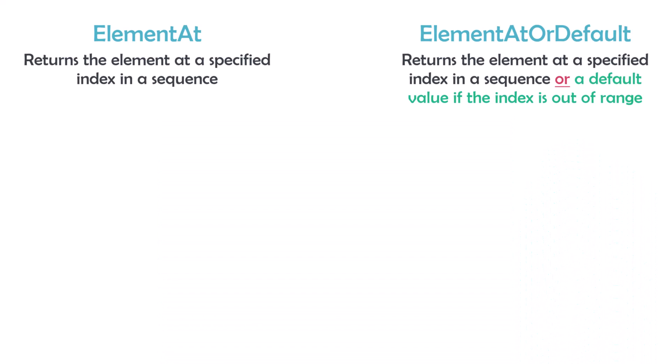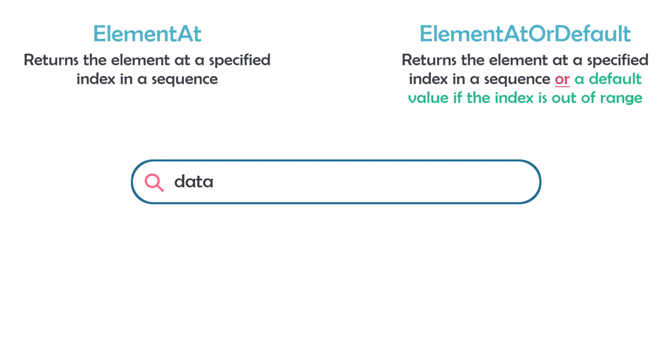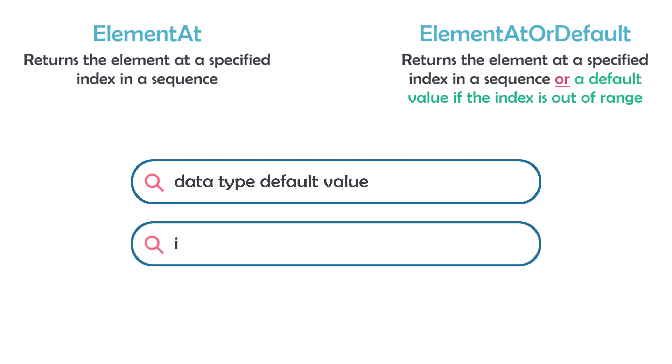But how do I know which default value a specific data type has? Just search for it: write the data type and then 'default value'. For example, 'integer default value' and you will get the default value — in this case it's 0. This is how to find the default value for a specific data type.